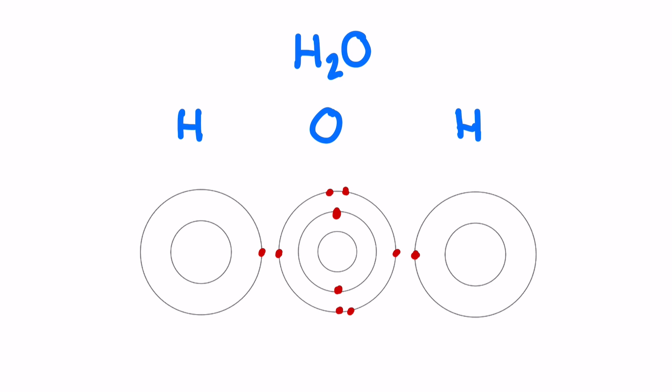An atom can also form covalent bonds with more than one other atom. H2O — good old-fashioned water — we have one oxygen atom that needs to gain two electrons and we have two hydrogen atoms that need to gain one electron as well. So the oxygen is actually going to form a single bond with each of these hydrogen atoms, and that way everybody is happy — everyone's got the number of electrons that they want to have. We have two single covalent bonds formed between these atoms and everybody has the number of electrons in that outer shell that they'd like to have.